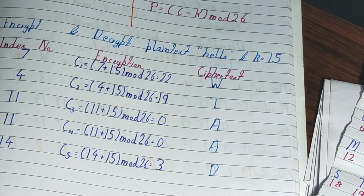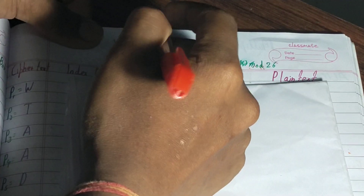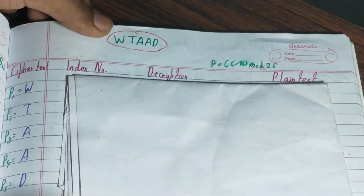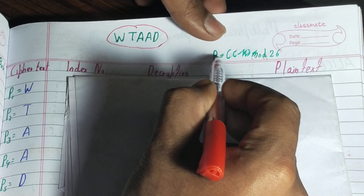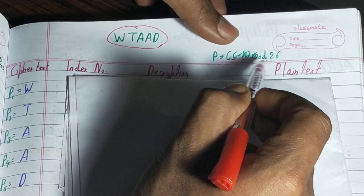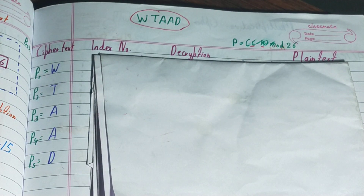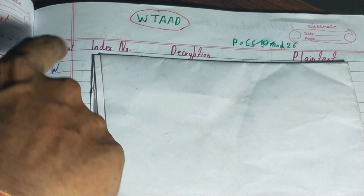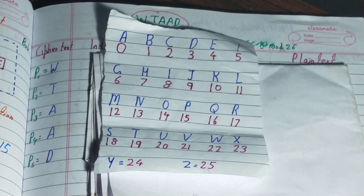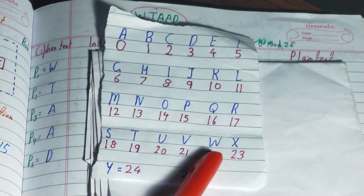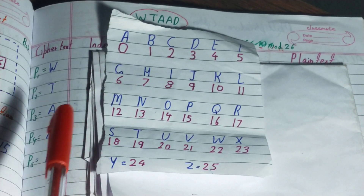Now let's work on the decryption process. Our ciphertext was W, T, A, A, D, and we'll decrypt it to get back the plaintext. The decryption formula is: P equals ciphertext minus key k, mod 26 — just the opposite of encryption. We write each letter individually and take its index value from the table: W is 22, T is 19, A is 0, A is 0, D is 3.